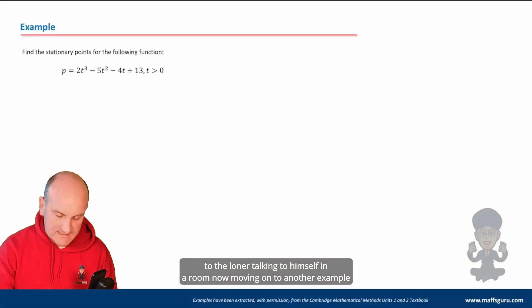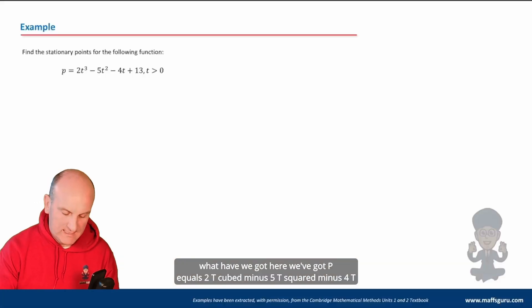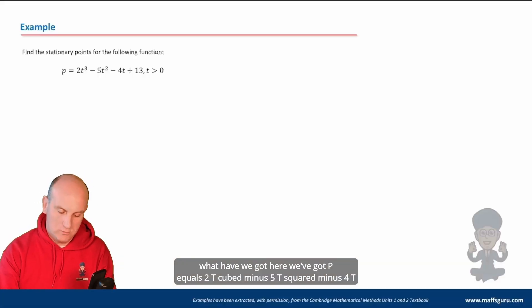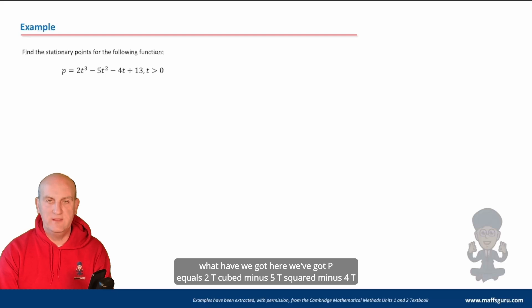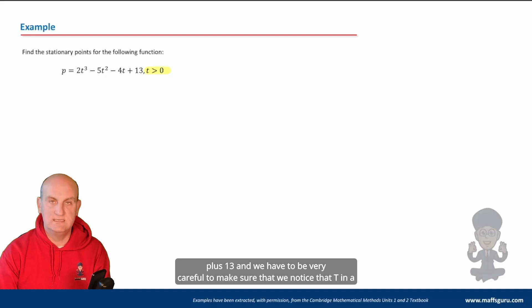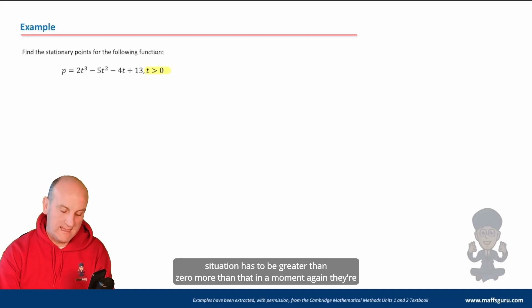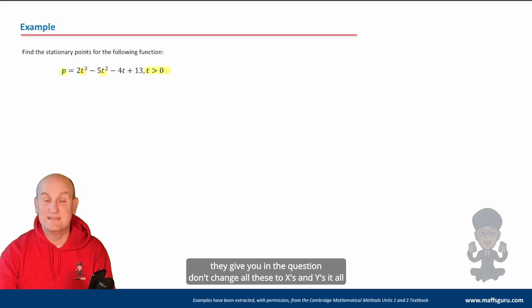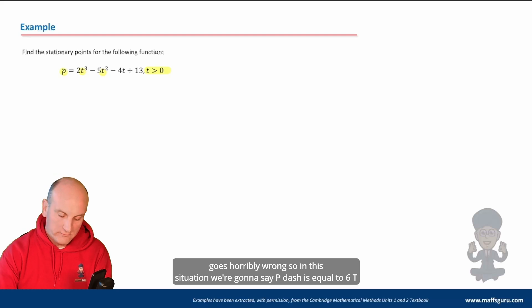Moving on to another example. We've got p = 2t³ - 5t² - 4t + 13, and we have to be very careful to notice that t has to be greater than zero. They're trying to trick you by using different letters, so make sure you use the letters given in the question — don't change everything to x's and y's, it all goes horribly wrong.